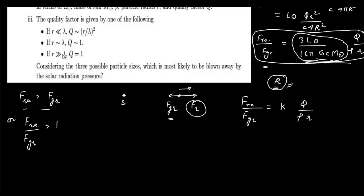When the particle size r is much greater than λ, Q = 1, so the ratio F_radiation / F_gravity is proportional to 1/r. This means the smaller the particle size, the more likely it is to be blown away. Decreasing r in this regime drives r toward λ.